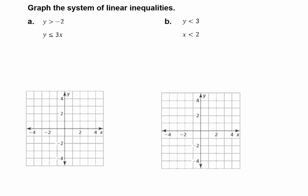Coming back to our example, we'll start with letter A. We have y is greater than negative 2. We need an m and a b. Because there's no x, our m is going to be 0. Our b, or y-intercept, is going to be negative 2. Because our symbol is strictly greater than, we're going to have a dotted line, and because it's greater than, we're going to be shading above.